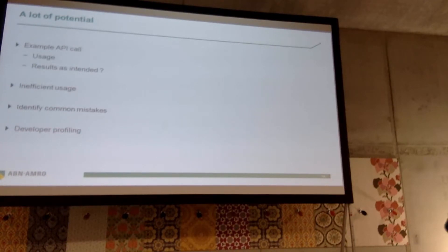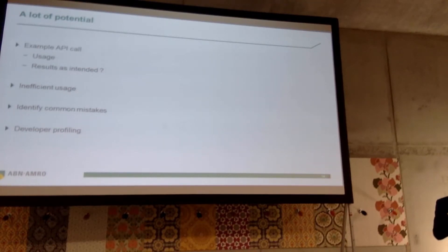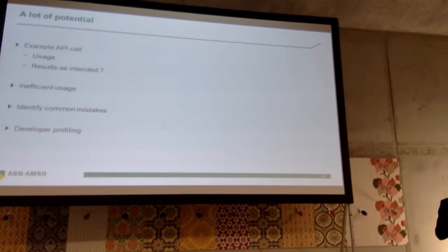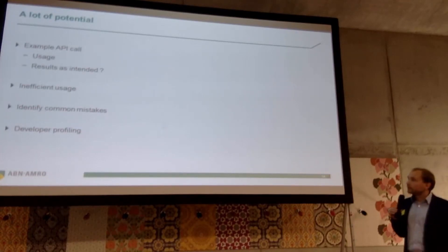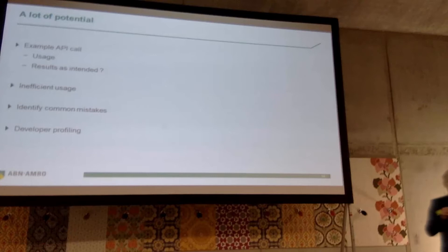We actually have a lot of potential for looking at this data. For instance, we can look at all the example code that we provided and see whether our examples are actually being used — searching the data to see how many developers are using our example API calls, whether they attempt on their own first and then try the example code, or never use it. We can also see the response they receive for the example code, because maybe the example code is broken over time due to some data dependency. We can also look for inefficient uses of our API — for example, if a developer is adding a lot of unnecessary data for every call, or using a refresh token for every call. We can actually spot that and, before he goes to production, point this out, which will improve his own application as well as the load on our system.